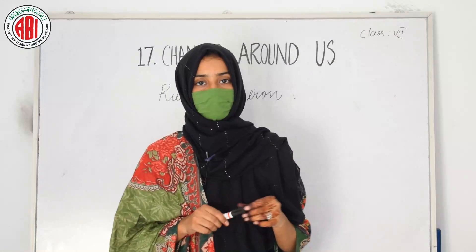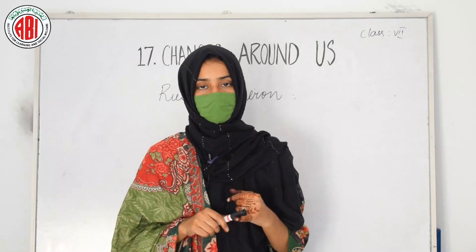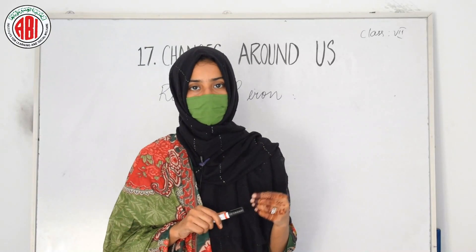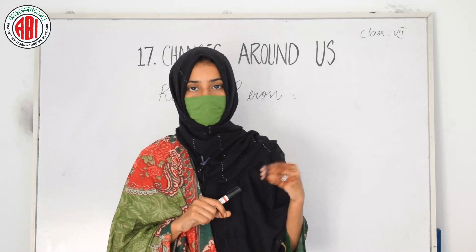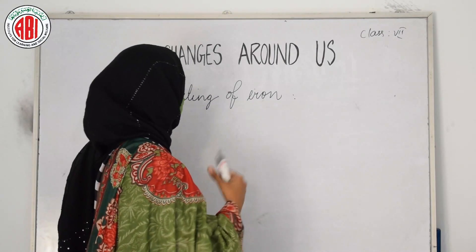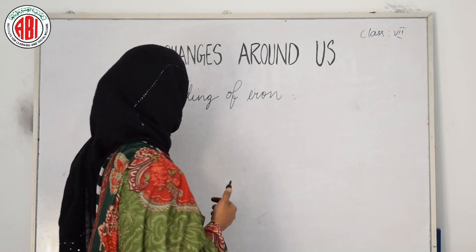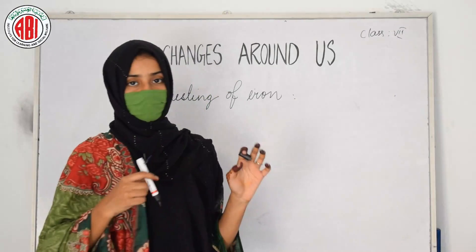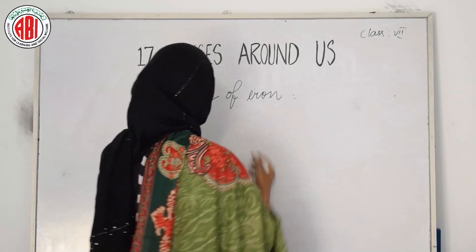Now we are going to discuss rusting of iron. When an iron nail, iron gauge, or any material made of iron is exposed to air, a brown material appears on the surface. That brown material forms when iron is exposed to the oxygen and moisture present in the air — this is called rusting of iron, and it is a chemical change.